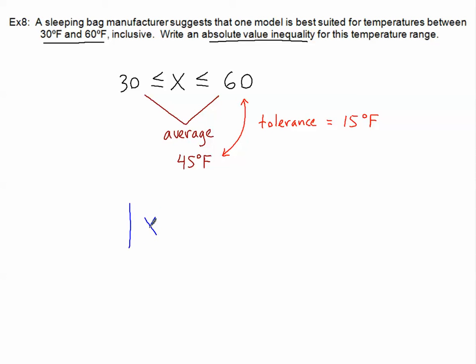I'm going to continue to use X. X minus my average, which is 45, will be less than or equal to my tolerance, which is 15. And that'll do it.